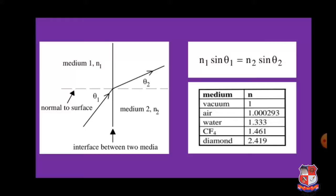This was all about Snell's law for refraction of light. The refraction phenomenon occurs between two different, non-identical media. In the same medium, light passes linearly at the same angle. The basic requirement for Snell's law is two non-identical media, and with that we can easily consider the refraction phenomenon. With this, the lecture is over. If you have any queries, you can post them in the comment section. Thanks for visiting this lecture.